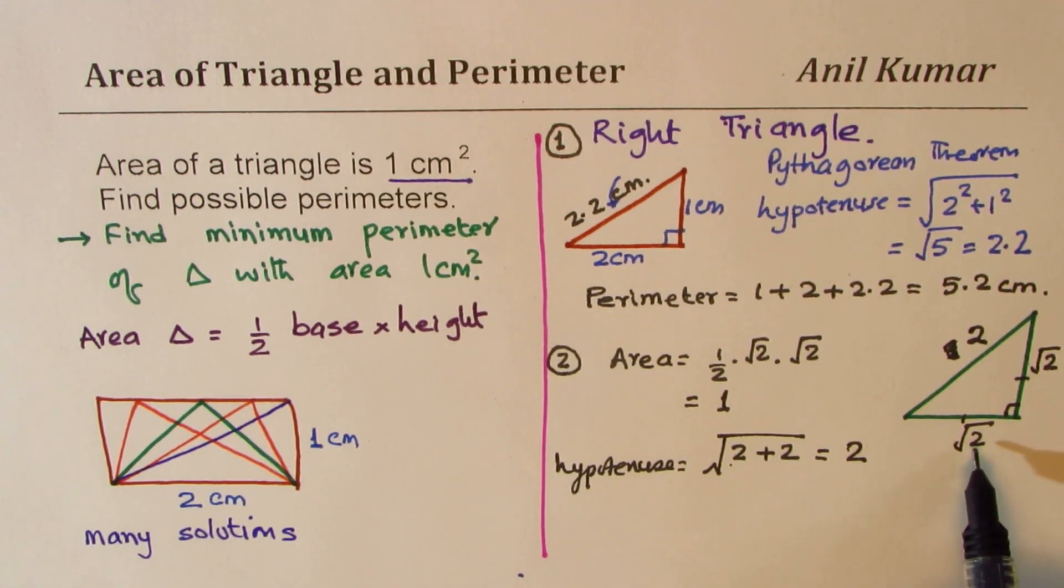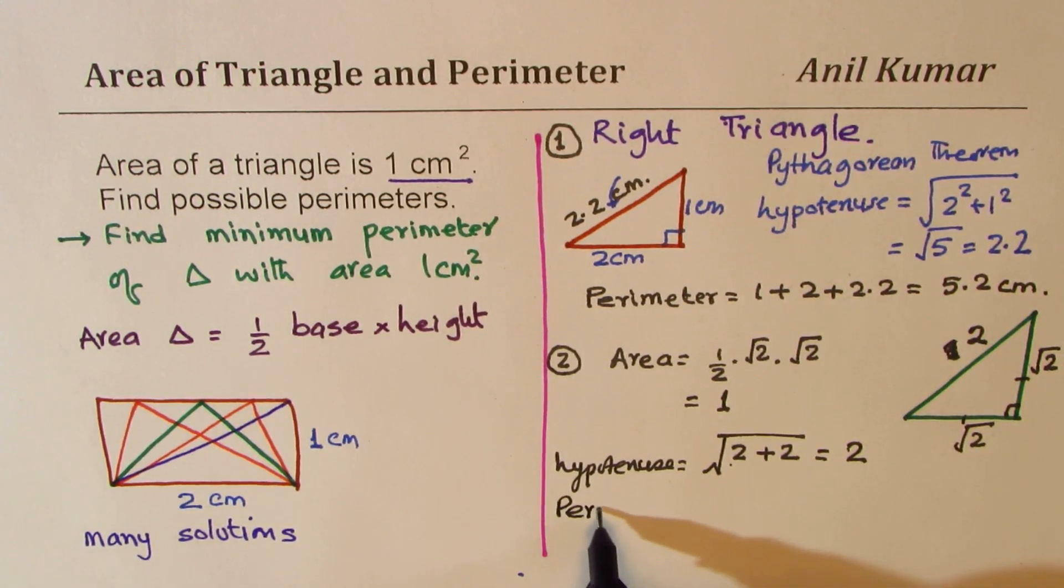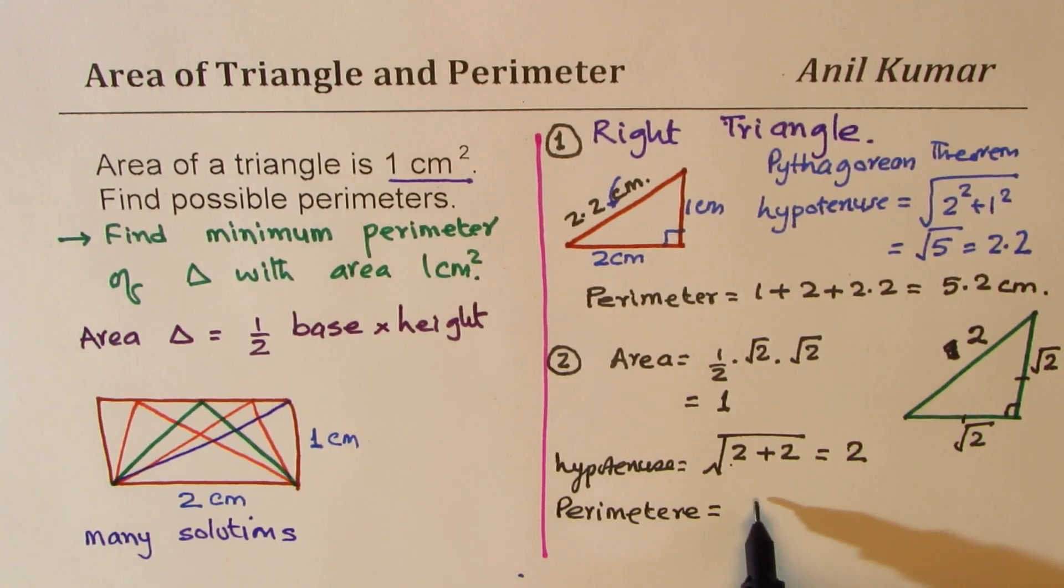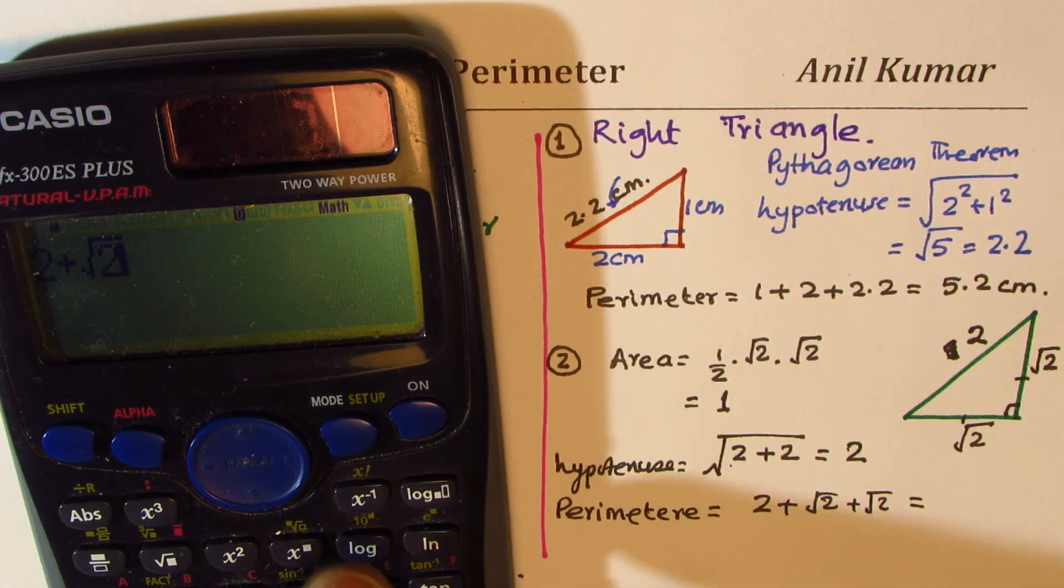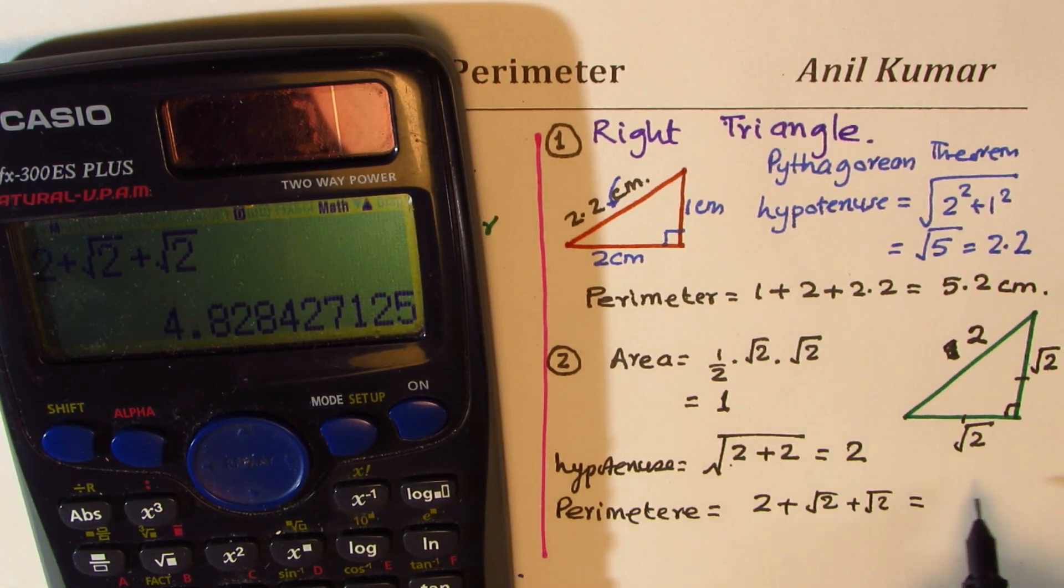Now, if I add perimeter to find all the sides, what is the perimeter? Perimeter is equals to two plus square root of two plus square root of two. It is equals to in decimals 4.82.